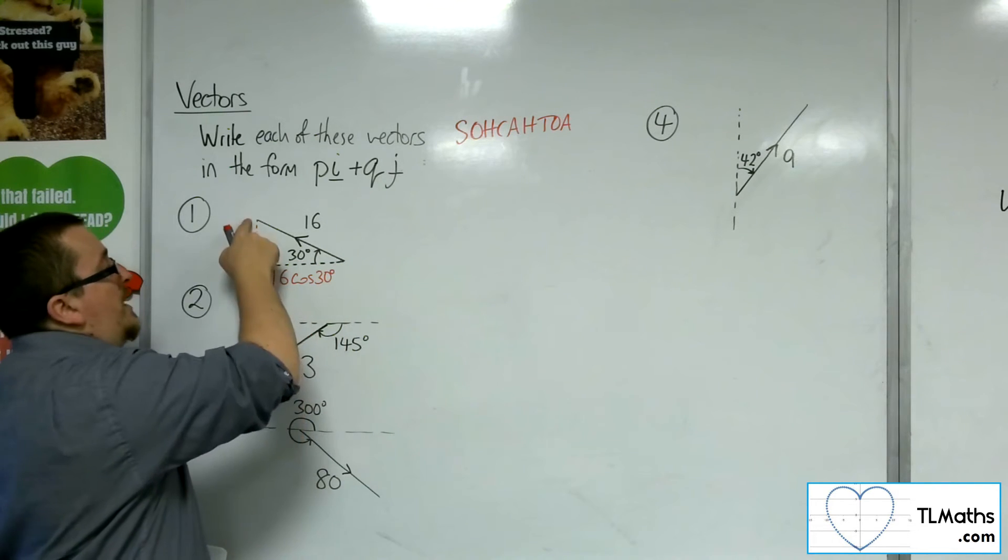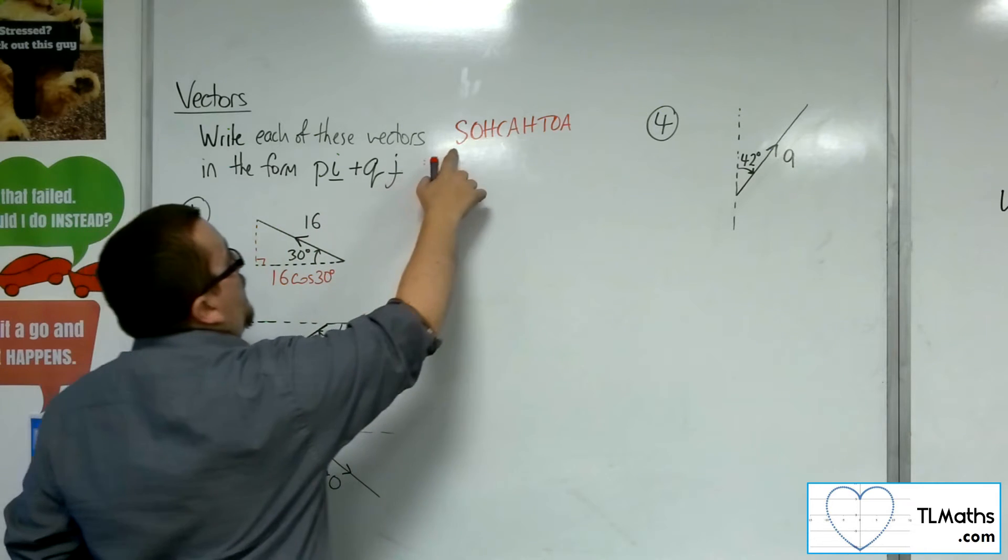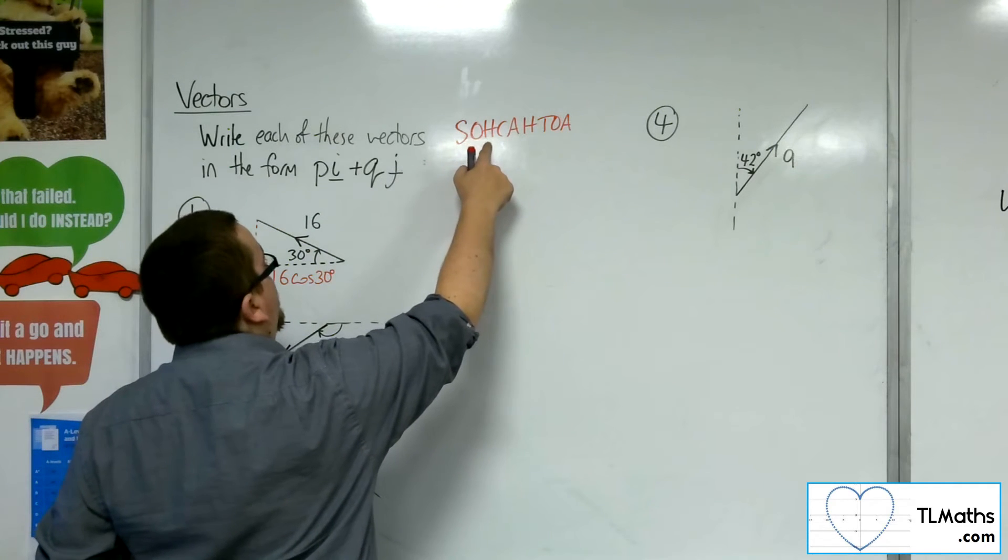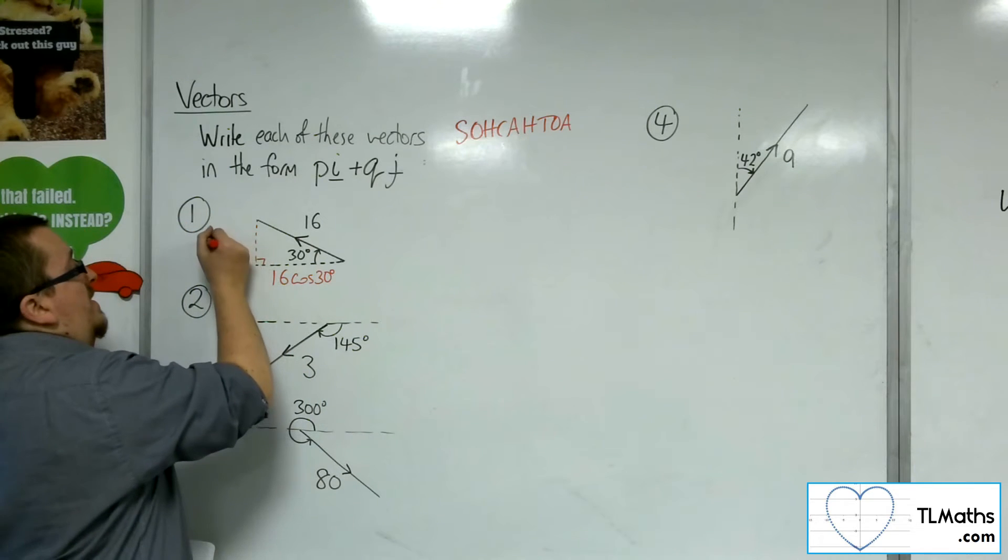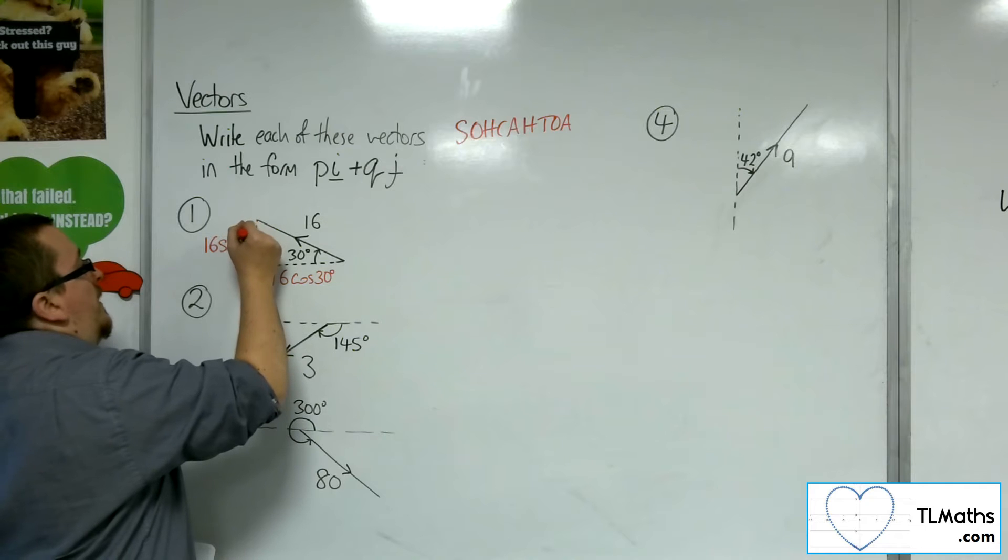So the adjacent is the hypotenuse times cosine of the angle. So that's 16 cosine of 30. And because now I'm looking at the opposite side, that's sine of 30 is equal to the opposite divided by 16.